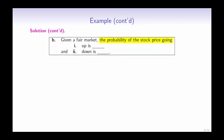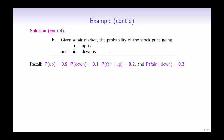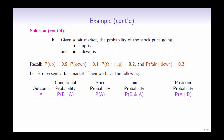For Part B, we will calculate the probability of the stock price going up and down given a fair market. Recall that P(up) = 0.9, P(down) = 0.1, P(fair market | up) = 0.2, and P(fair market | down) = 0.3. Let B represent a fair market. For each outcome A, we will use the Tableau approach to calculate the posterior probabilities.